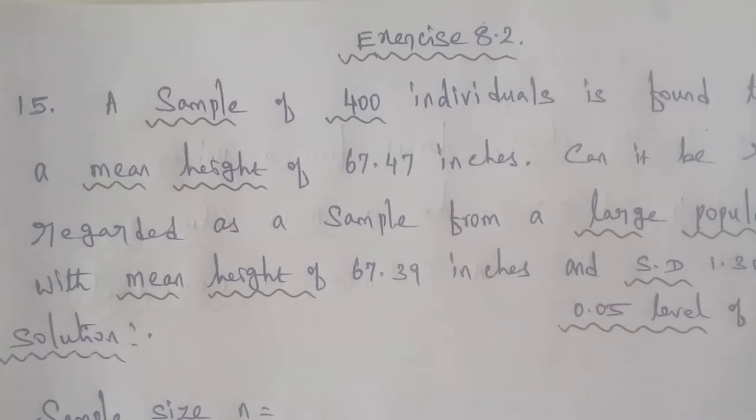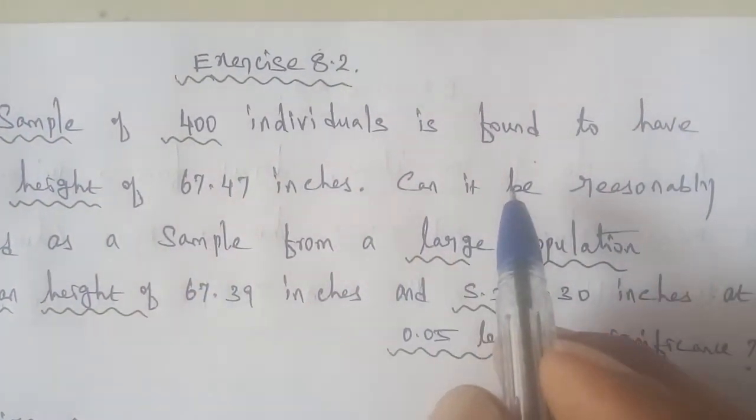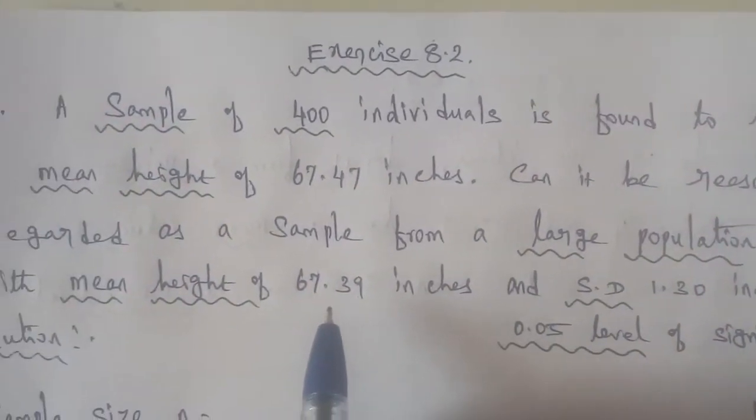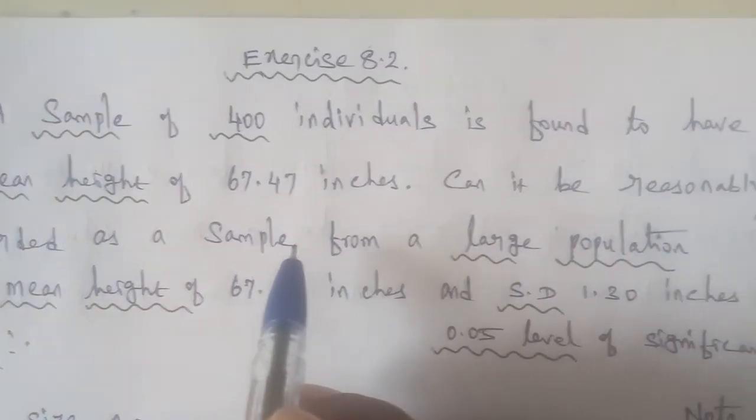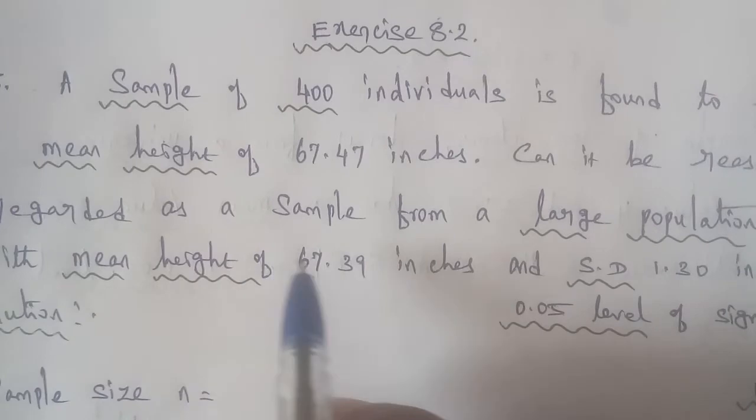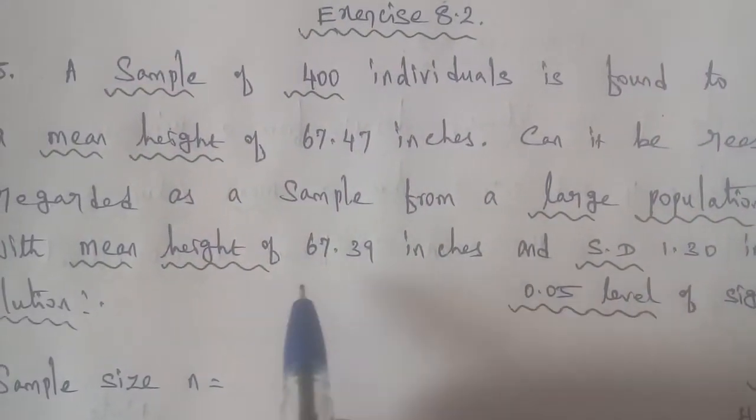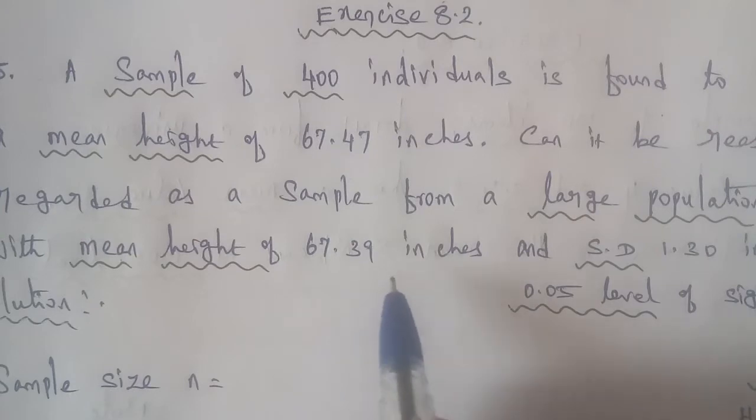Exercise 8.2, Question number 15. A sample of 400 individuals is found to have a mean height of 67.47 inches. Can it be reasonably regarded as a sample from a large population with mean height of 67.39 inches and standard